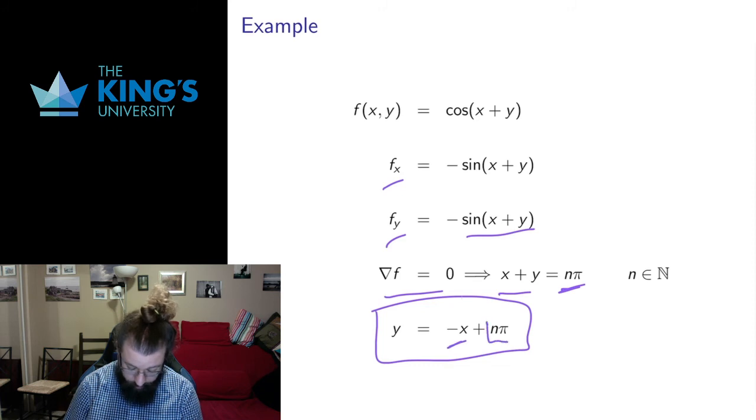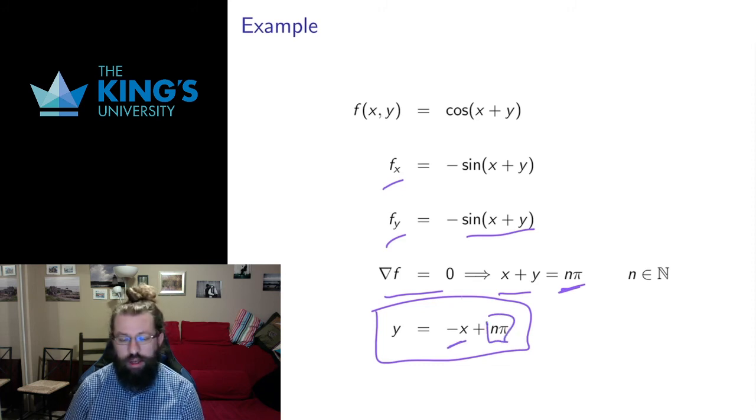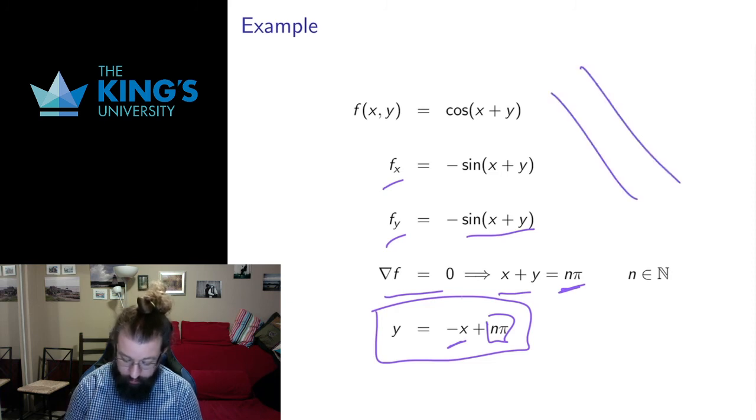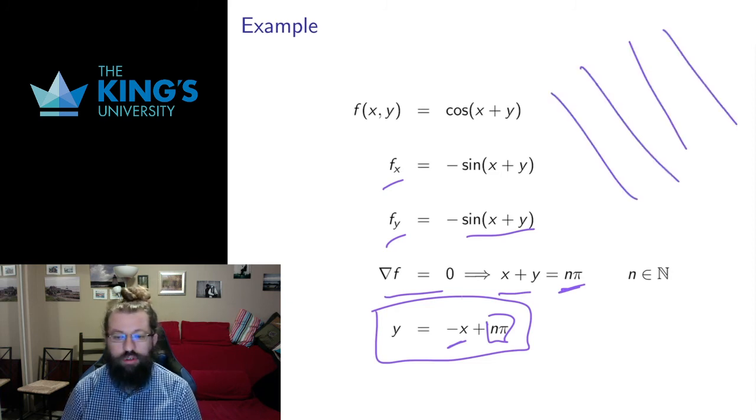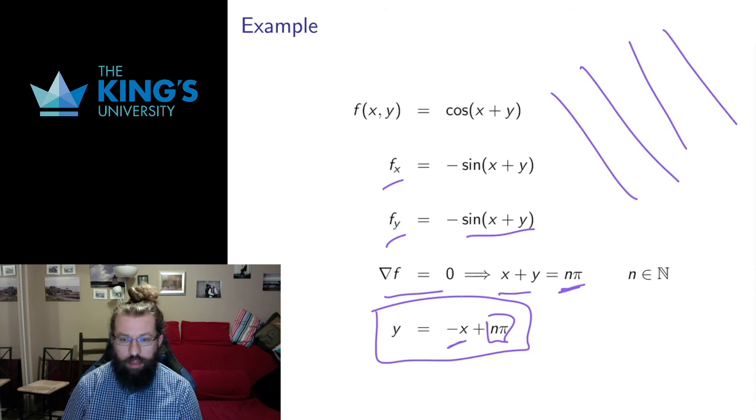They all have the same slope negative one, but they have different multiples of pi as their intercept. So this is going to give me a series of parallel lines in R^2 of slope negative one. And I'm going to get extrema along all of those parallel lines.